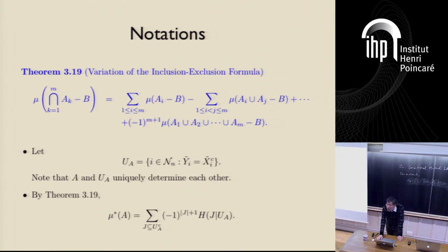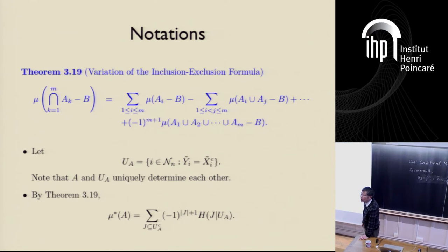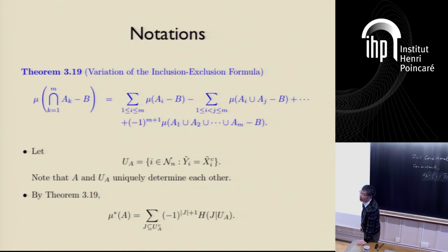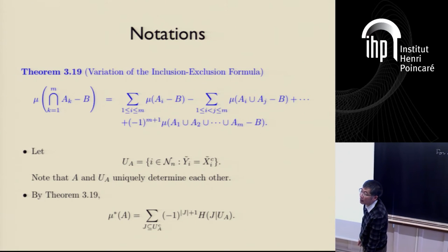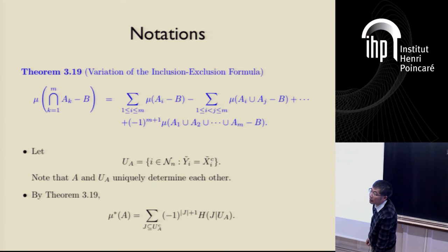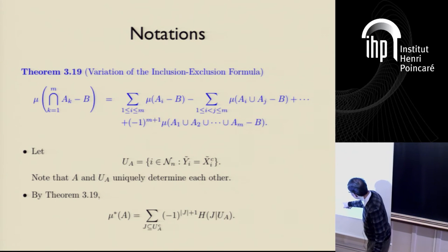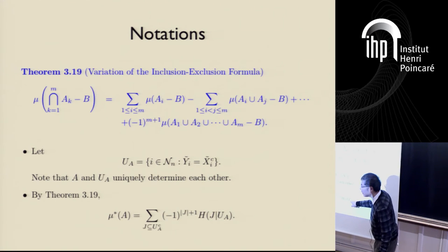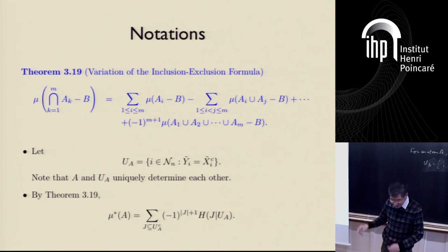I don't really understand this notation — UA is just a set, right? So what does it mean to have conditional entropy given... Oh, I'm sorry, that's bad notation. It should be X of UA. This is X of j. Yes, thank you — I didn't spot that.